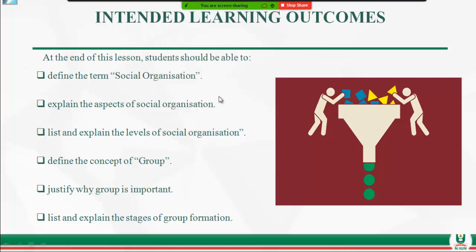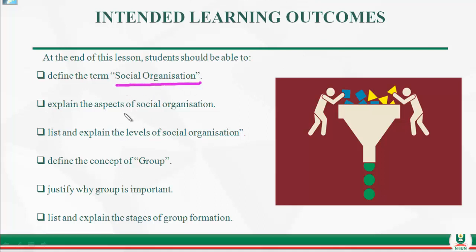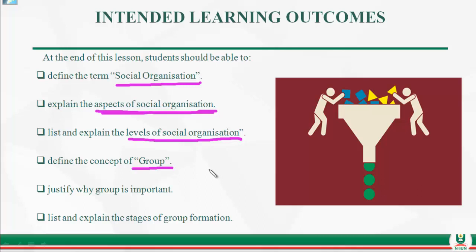Let's take the intended learning outcomes first. By the end of this lesson you should be able to define the term social organization, explain the aspects of social organization, and list and explain the levels of social organization. You should also be able to define the concept of group, justify why groups exist, and list and explain the stages of group formation.